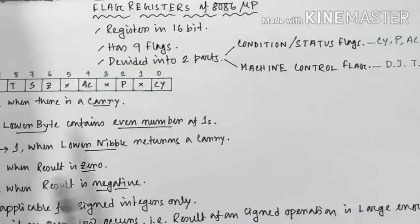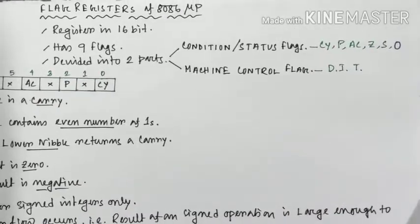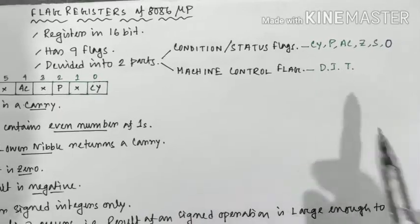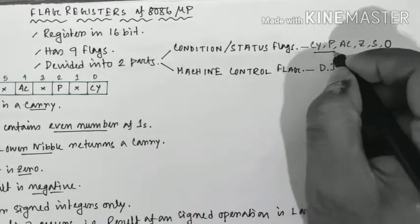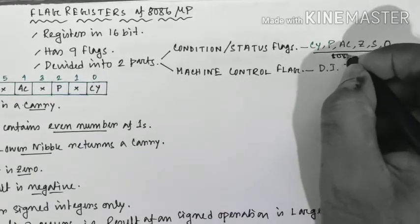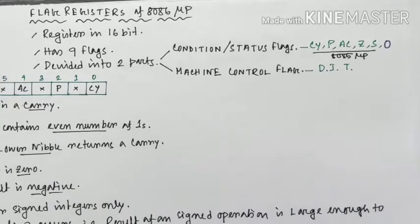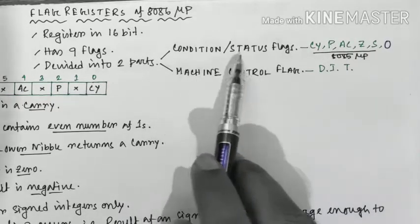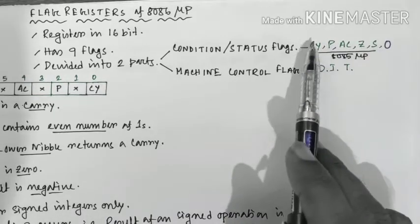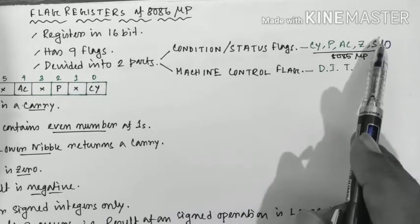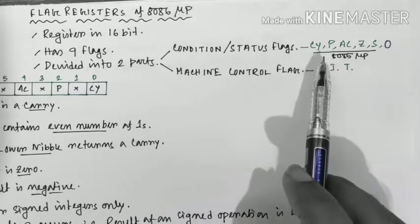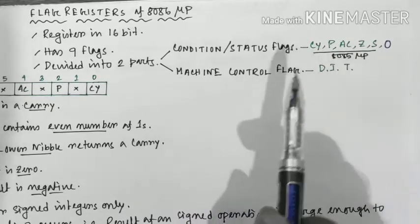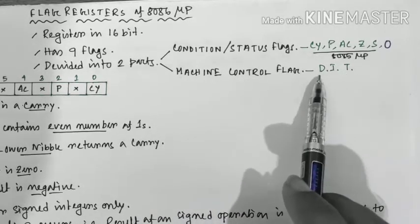In the condition flag category we have six flags: carry, parity, auxiliary carry, zero, sign, and overflow. The first five are already known to us because we studied them in the 8085 microprocessor. Only one extra flag is added, which is overflow. In the machine control flag category we have three flags: D for direction, I for interrupt, and T for trap.